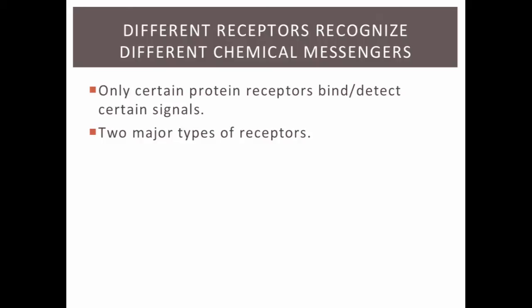It turns out that different receptors recognize different chemical messengers. It would be pretty awful if, instead of just a woman's uterus contracting when her pituitary gland releases oxytocin, her whole body contracted. It's only the cells with a matching receptor that will bind to and respond to any given signaling molecule. After we explore this idea in more detail, we'll examine the two major types of signal receptors.